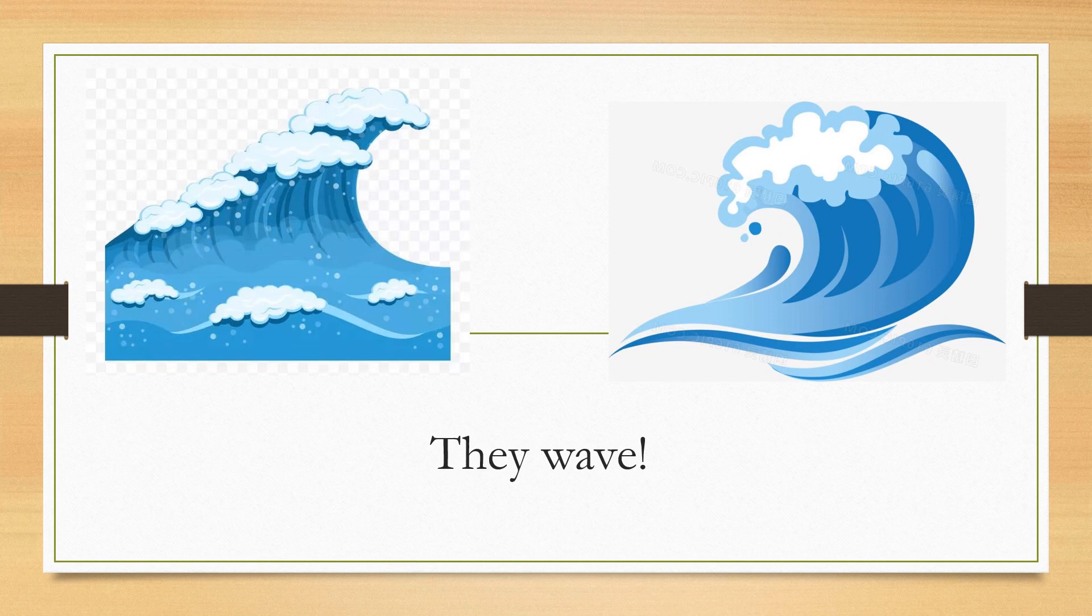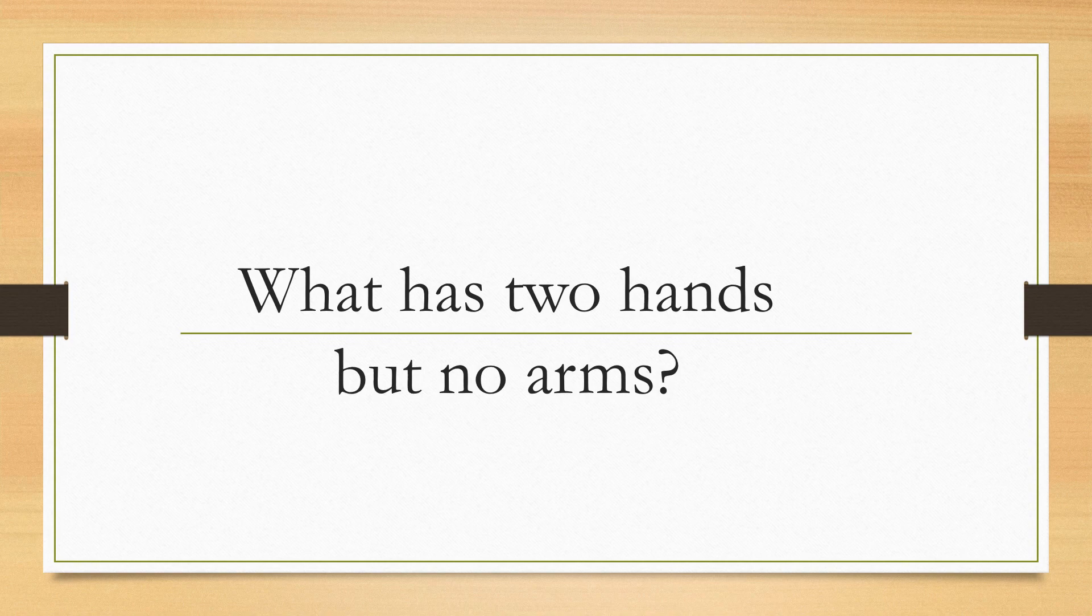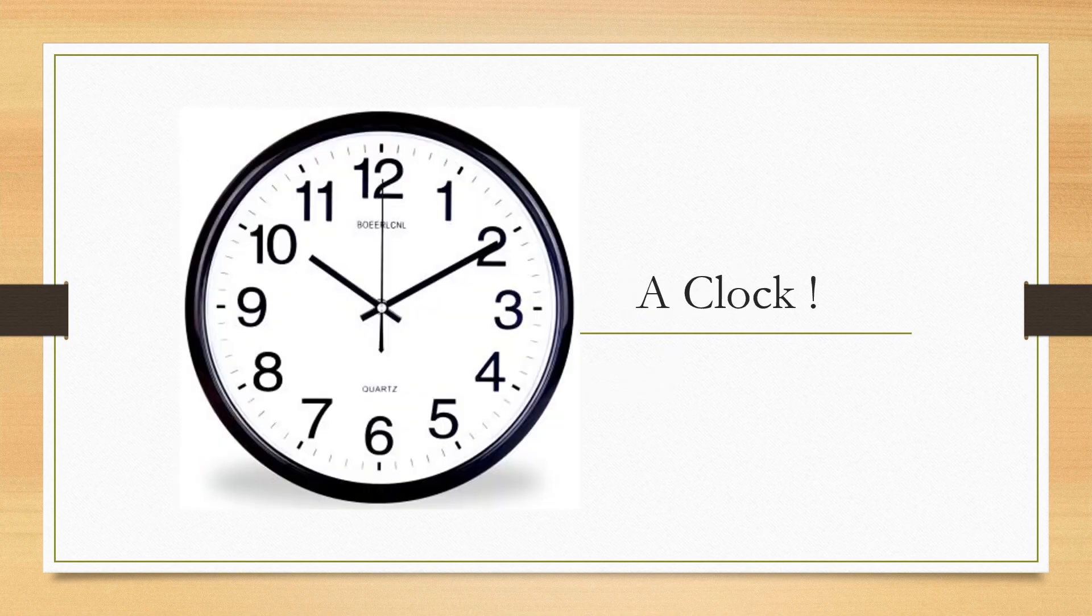Coming up next is, what has two hands but no arms? The answer is, a clock.